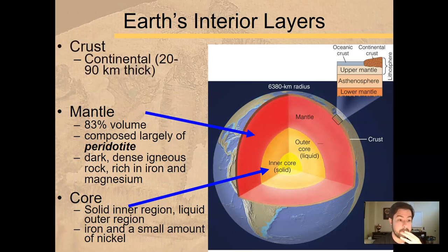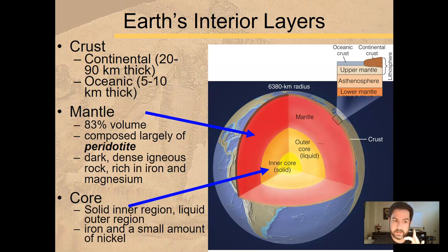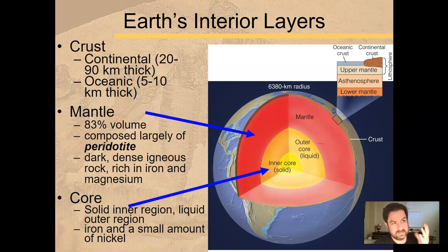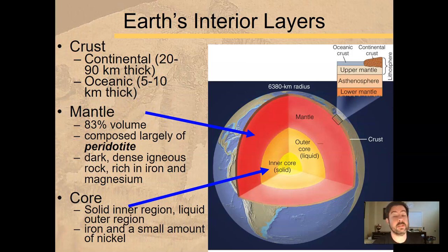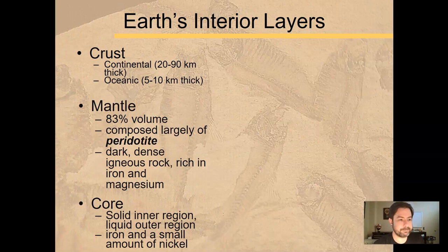Then we have the crust. There are two types of crust. We have continental crust, which is thicker — about 20 to 90 kilometers thick, that's roughly 12 to 70 miles, depending on where you are. And then oceanic crust, which is much thinner. So two different types of crust.